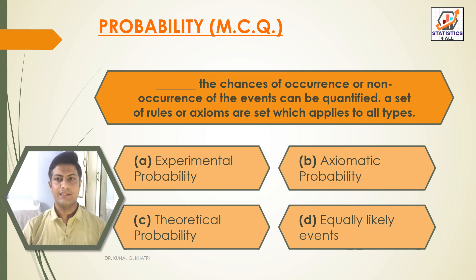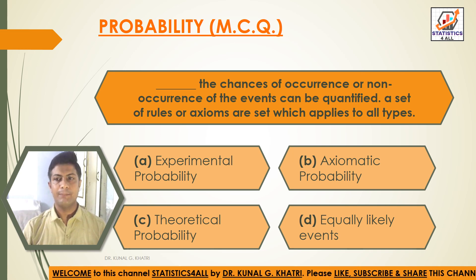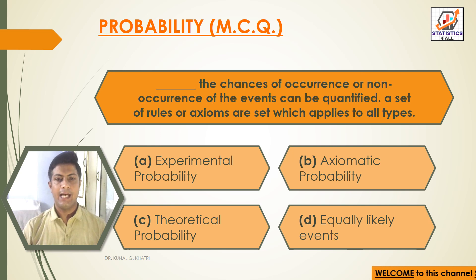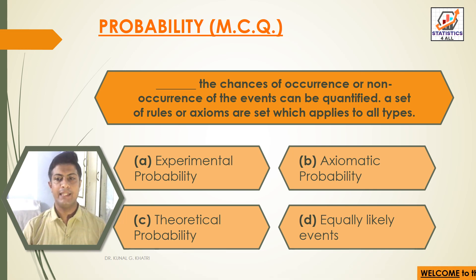Question 3: Dash — the chances of occurrence or non-occurrence of the events can be quantified. A set of rules or axioms are set which applies to all types. Option A: Experimental probability. Option B: Axiomatic probability. Option C: Theoretical probability. Option D: Equally likely events. Answer: Option B — Axiomatic probability: the chances of occurrence or non-occurrence of the events can be quantified, and a set of rules or axioms applies to all types.